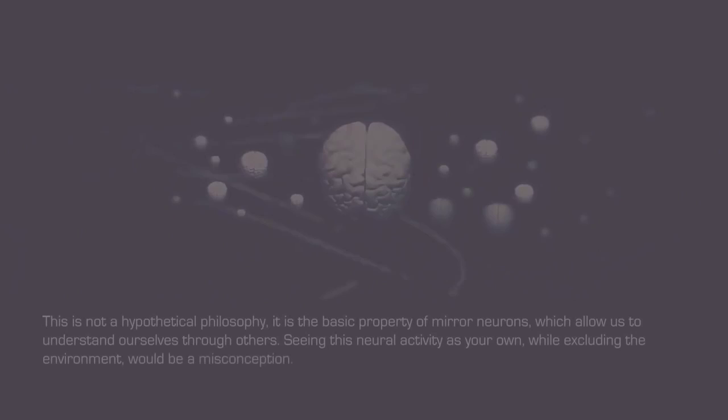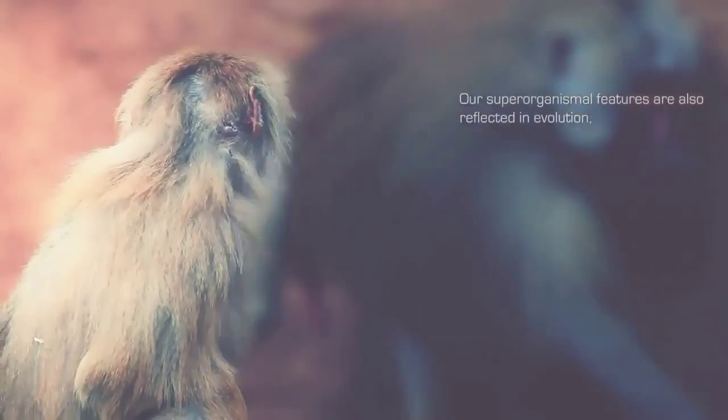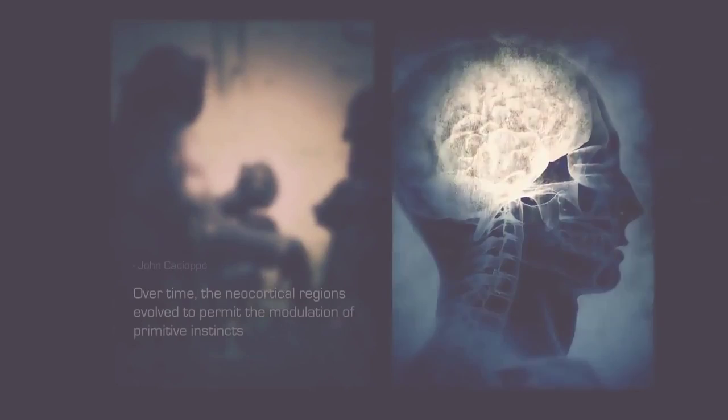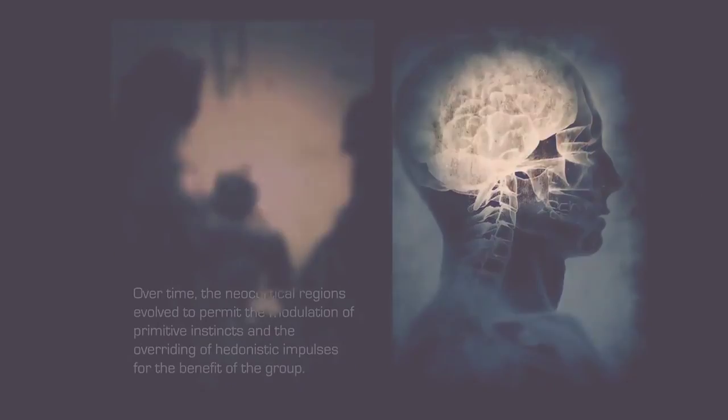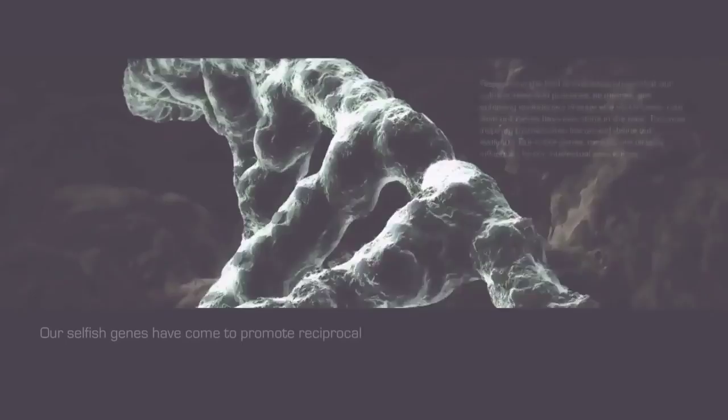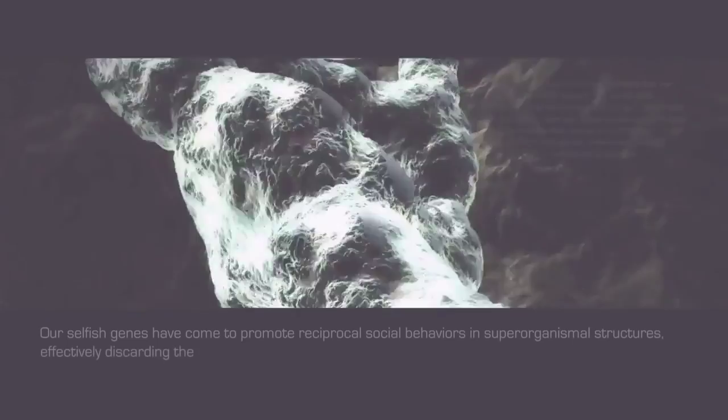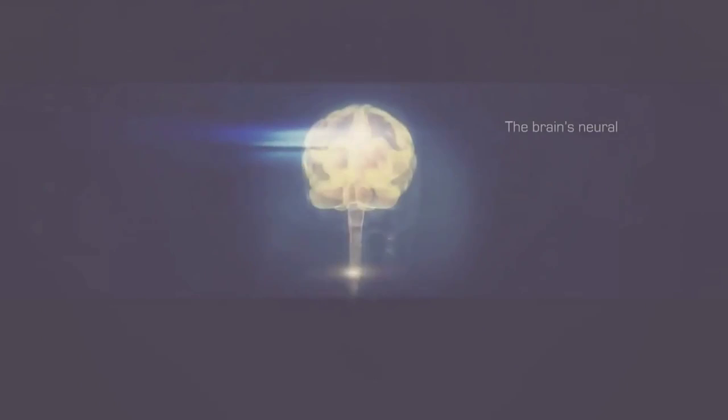Our superorganismal features are also reflected in evolution, where our survival as primates relied on our collective abilities. Over time, the neocortical regions evolved to permit the modulation of primitive instincts and the overriding of hedonistic impulses for the benefit of the group. Our selfish genes have come to promote reciprocal social behaviors in superorganismal structures, effectively discarding the notion of survival of the fittest. The brain's neural activity resonates most coherently when there is no dissonance between these advanced new cerebral regions and the older, more primitive ones.